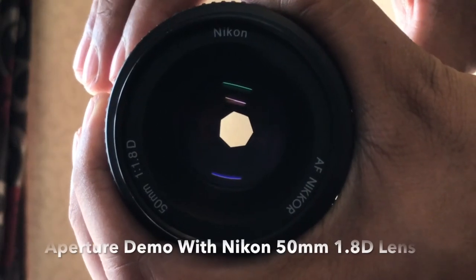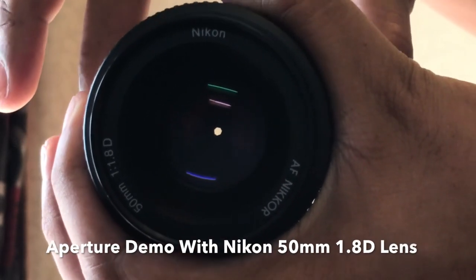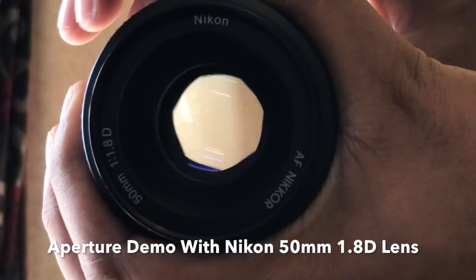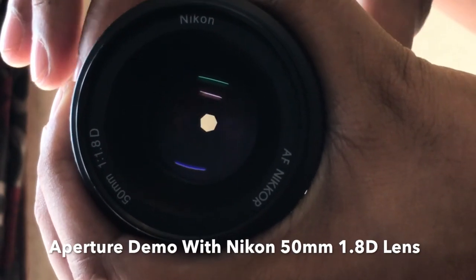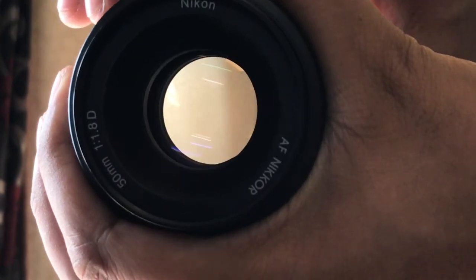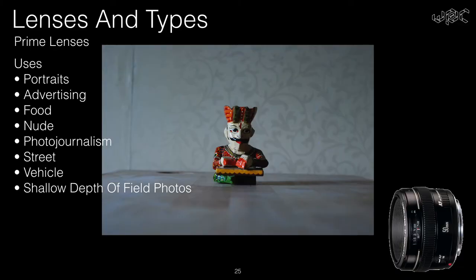Aperture plays a vital role in defining the focus of an image and the light as well. That's why fixed aperture lenses or prime lenses are much costlier than lenses with variable aperture. A variable aperture is easier to construct than a fixed aperture. As discussed in a previous section about lens types, prime lenses have a lot of uses and are constantly used by professionals in almost all fields of photography. We highly recommend you have a prime lens in your kit.